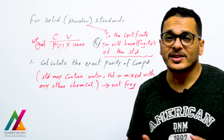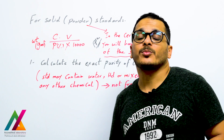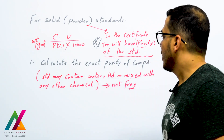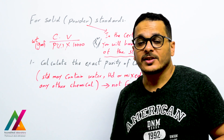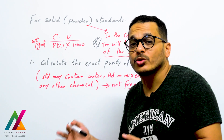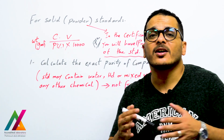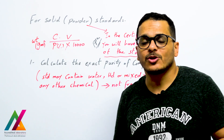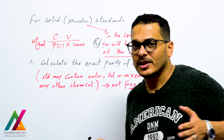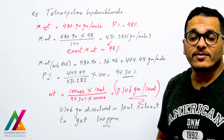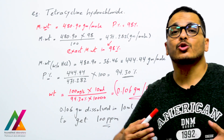In the certificate for each solid standard, you will find the purity — 99%, 98%, or whatever it may be. But you should first calculate the exact purity for your compound. Sometimes compounds contain water, are mixed with hydrochloride (HCl), or mixed with other chemicals. In that case, you must calculate the exact purity for your compound alone, without those mixed compounds, as shown in this example.